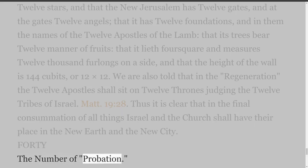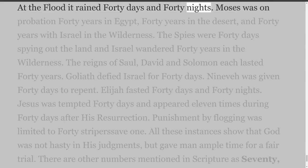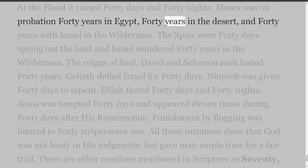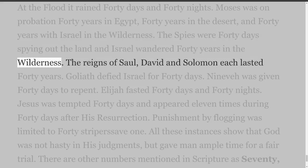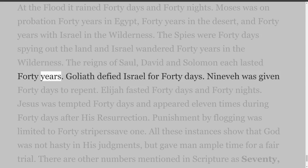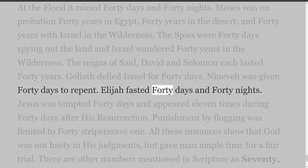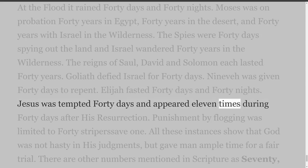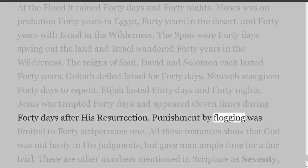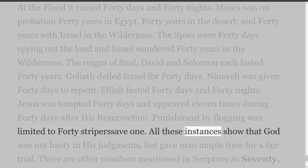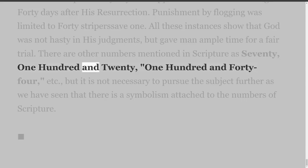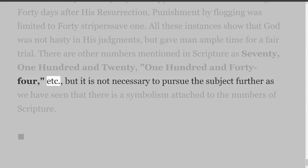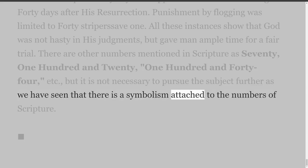40. The Number of Probation. At the flood it rained forty days and forty nights. Moses was on probation forty years in Egypt, forty years in the desert, and forty years with Israel in the wilderness. The spies were forty days spying out the land and Israel wandered forty years in the wilderness. The reigns of Saul, David and Solomon each lasted forty years. Goliath defied Israel for forty days. Nineveh was given forty days to repent. Elijah fasted forty days and forty nights. Jesus was tempted forty days and appeared eleven times during forty days after his resurrection. Punishment by flogging was limited to forty stripes save one. All these instances show that God was not hasty in his judgments, but gave man ample time for a fair trial. There are other numbers mentioned in Scripture as 70, 120, 144, etc., but it is not necessary to pursue the subject further, as we have seen that there is a symbolism attached to the numbers of Scripture.